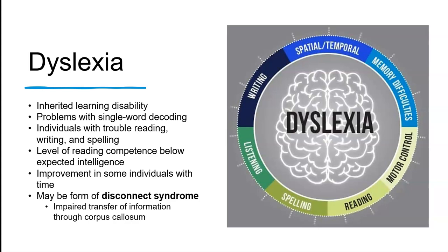Their writing may be disorganized and uneven — letters in the incorrect order, or writing a 'B' instead of a 'D' to spell dog. Some people can improve their reading ability as they get older, but the improvement may reflect that the nervous system is just maturing and retaining things better. There may also be a form of disconnection syndrome, where there is impaired transfer of information through the corpus callosum that connects the right and left hemispheres of the brain.